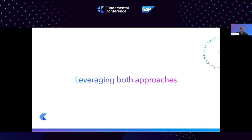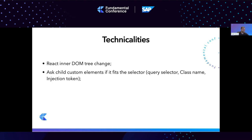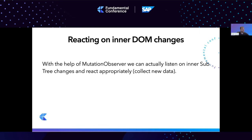So how can we leverage both approaches? Let's dig into the technicalities. First, we need to react to DOM changes — for example, when a new element is added, when an old element is removed, or when it has been changed. We also need to support injection tokens, class names, and query selectors. To react on inner DOM changes, this can be done with the help of the MutationObserver, which listens to any change in the inner DOM of our component.